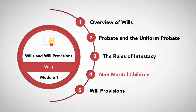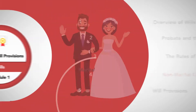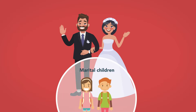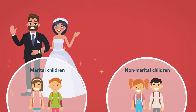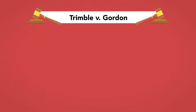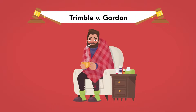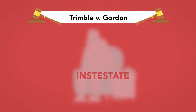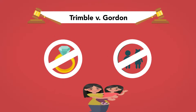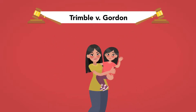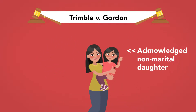Non-Marital Children. Historically, marital children were given preference over non-marital children in matters of estate succession. In the Supreme Court case of Trimble v. Gordon, Gordon died intestate, leaving behind no spouse or children, just a girlfriend with whom he had one acknowledged but non-marital daughter.